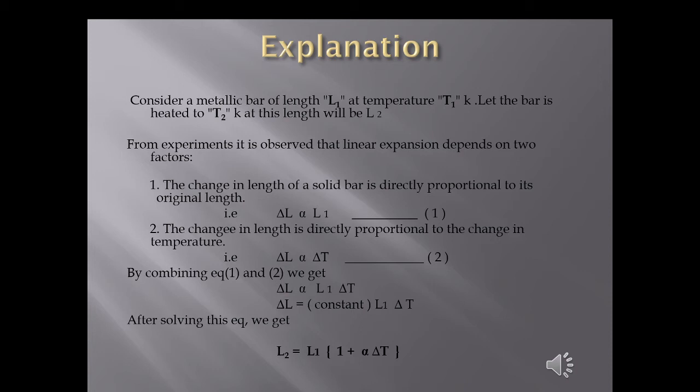Alpha is called the constant of proportionality and is also known as the coefficient of linear expansion. It is defined as the increase in length per unit length per degree rise in temperature. Alpha depends on the material of the rod — materials that expand more have a higher value of alpha. The unit of alpha is °C⁻¹, °F⁻¹, or K⁻¹.